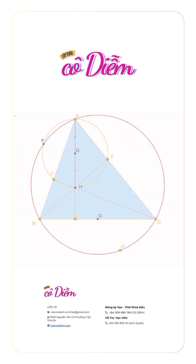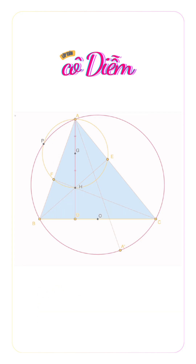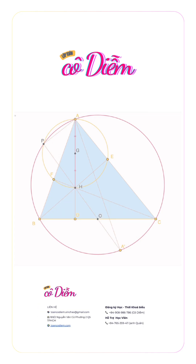Part 2: denote gamma intersects omega at P different from A. Prove that points P, H, O are collinear — this is part of IMO 2015 Problem 4.